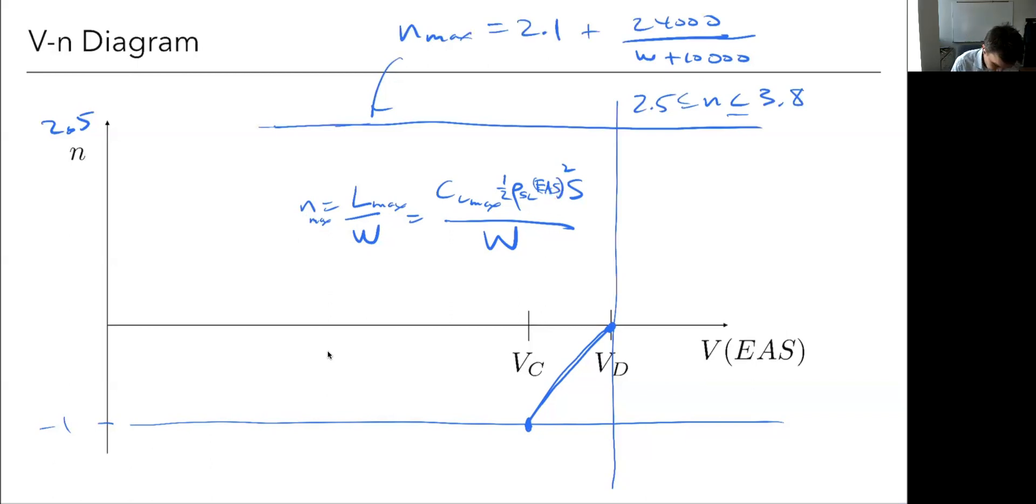But you can see that for different n's, I'm going to get a different equivalent airspeed here. So in other words, this curve is going to look kind of quadratic. You can see this is an equation of a parabola. This was a y equals some constant times x squared. It's going to look something like this.